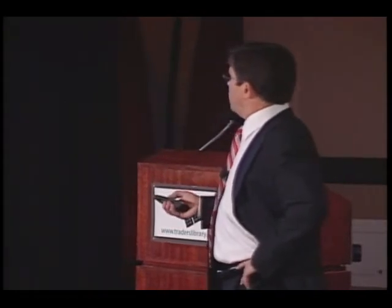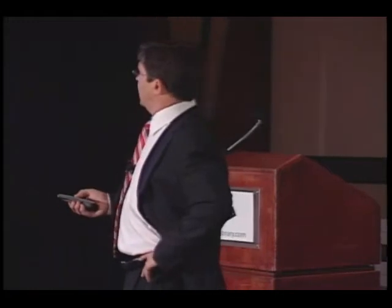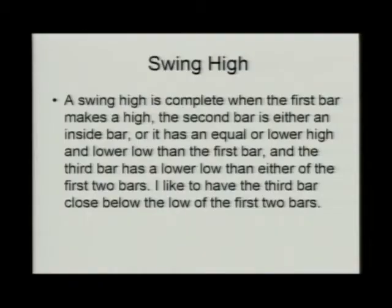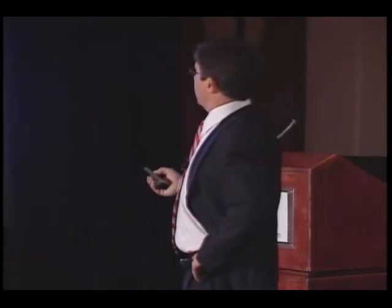Here's a way to help identify the swings that make up the trend. This helps me to see the swing highs and swing lows a little bit more clearly. A swing high is complete when the first bar makes a high. The second bar is either an inside bar or it has an equal or lower high and lower low than the first bar. And the third bar has a lower low than either of the first two bars.